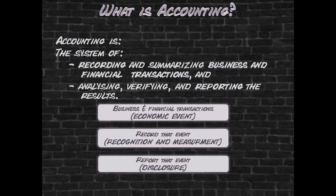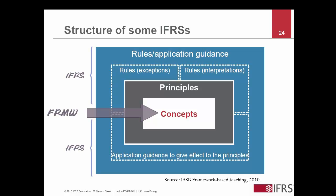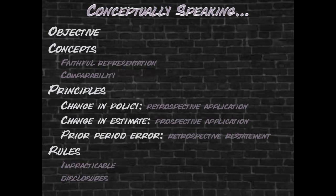The accounting process is triggered by an economic event. The events considered by IAS 8 are changes in accounting policies and estimates and prior period errors. As with many international financial reporting standards, IAS 8 is also based on underlying concepts as contained in the IASB framework. In particular, IAS 8 is focused on faithfully representing the various events and ensuring comparability across time and with other reporting entities. In line with the concepts, IAS 8 requires retrospective application and restatement of a change in policy or correction of prior period error.